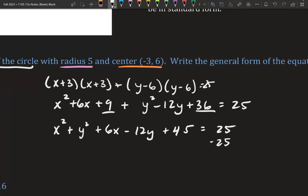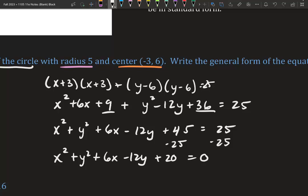That all equals 25. We need to equal this to 0, so we subtract 25. And we're left with x squared plus y squared plus 6x minus 12y plus 20 equals 0. And there is our general form.